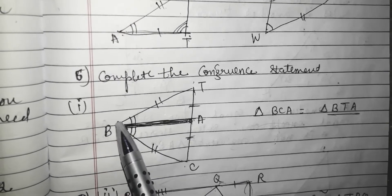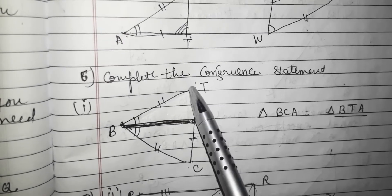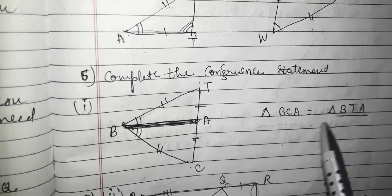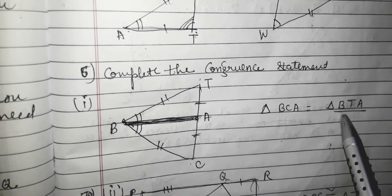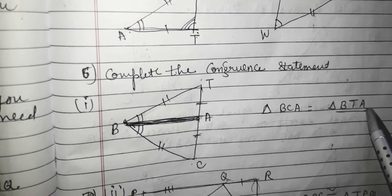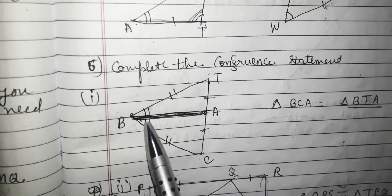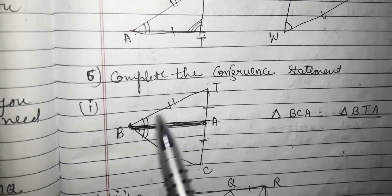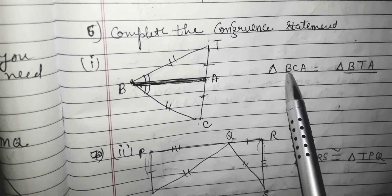I will use the same sequence in the second triangle. Starting from B — angle 2 — then going to T, then T to A. So, the right sequence to write the second triangle is triangle BTA. Triangle BCA is congruent to triangle BTA.